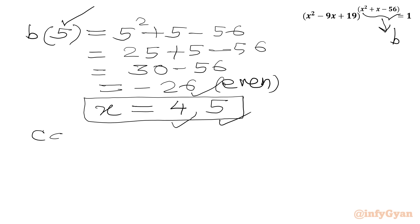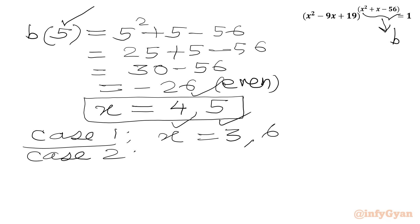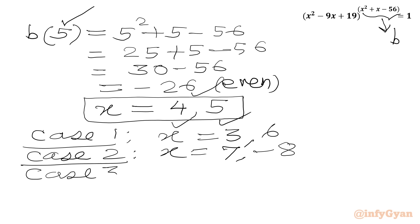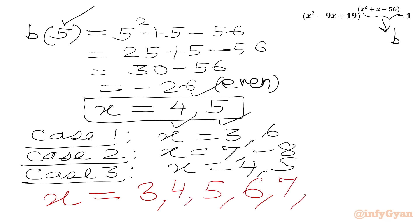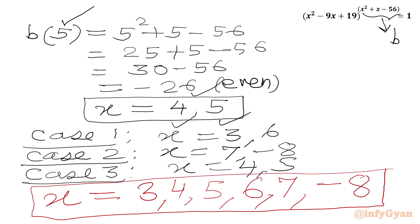Summing up all cases: Case 1 gave x equal to 3 and 6; Case 2 gave x equal to 7 and negative 8; Case 3 gave x equal to 4 and 5. So all the solutions are x equal to 3, 4, 5, 6, 7, and negative 8. I hope you liked this video — thank you so very much for watching. Do not forget to like, share, and subscribe. Bye-bye, good luck, take care!